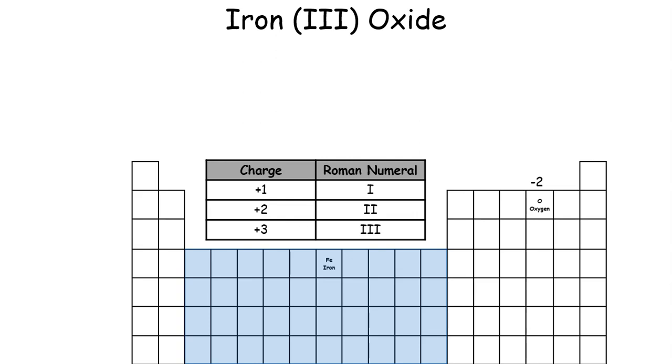The first step is you want to identify what you're working with. So I have iron here and I go down to my periodic table and I see iron is here and it's a transition metal. So iron is Fe.